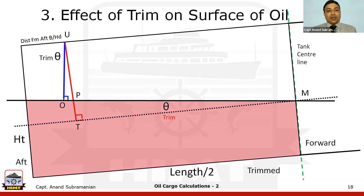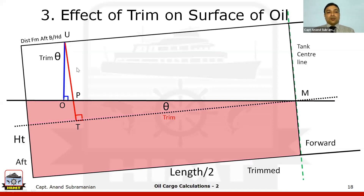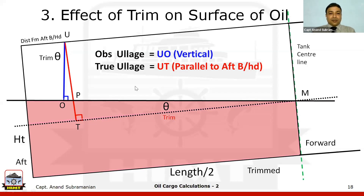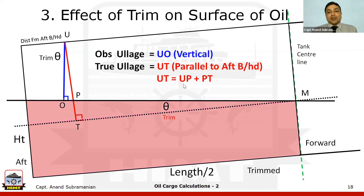UT cannot be found directly, so we split it into UP + PT, where UP is the tape correction component and PT is the trim correction component. We resolve two triangles: triangle UOP (to find UP) and triangle PMT (to find PT), both right-angle triangles. The angle theta — caused by the ship's trim — is the same in both triangles, being alternate angles. Knowing theta and one side allows us to solve for all missing sides.